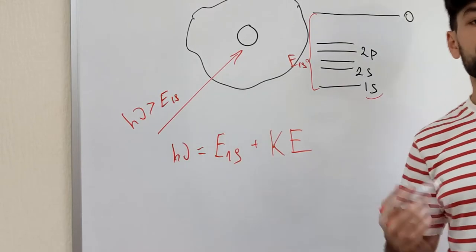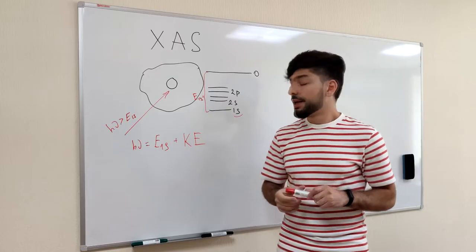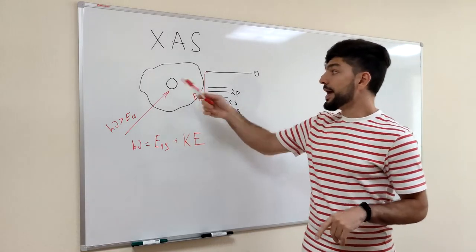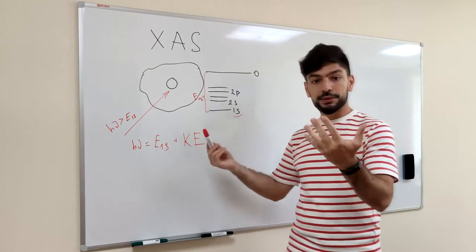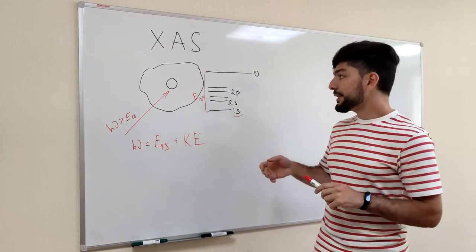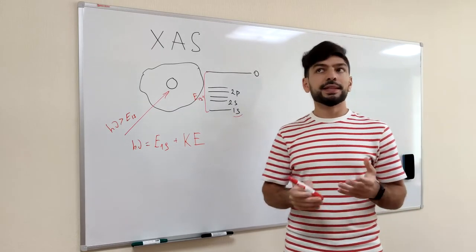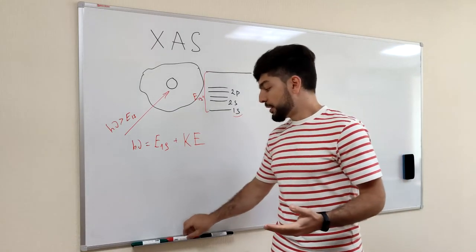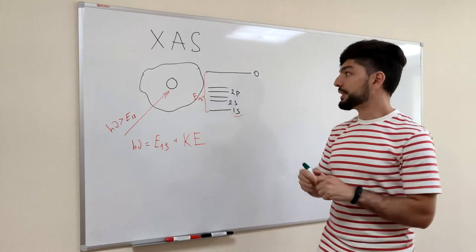which we also call a photoelectron. But since this atom is inside the matter, the electron cannot simply escape. It experiences collisions with neighboring atoms in the matter.